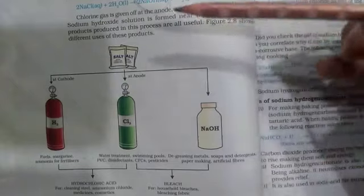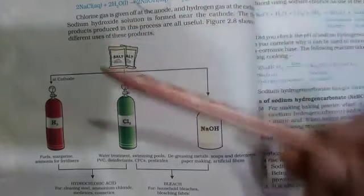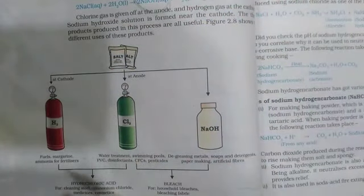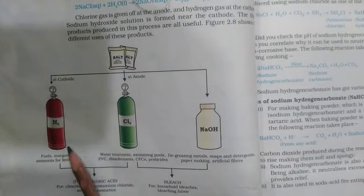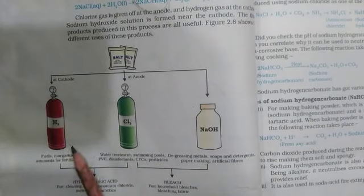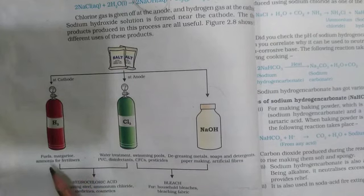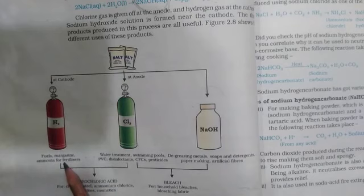First, we will discuss hydrogen gas, which is formed at the cathode. Hydrogen gas is used as a fuel, for making ammonia for fertilizers, and for making margarine.